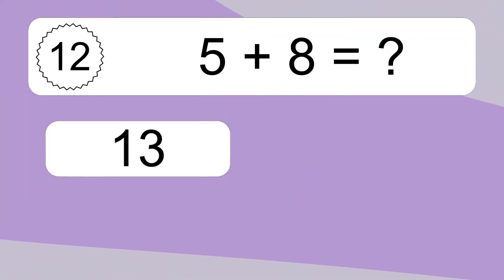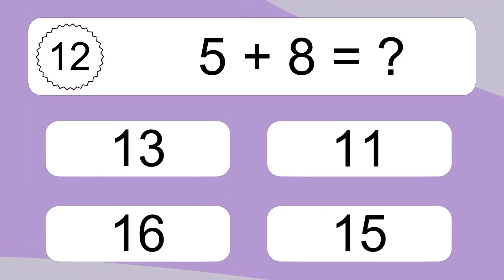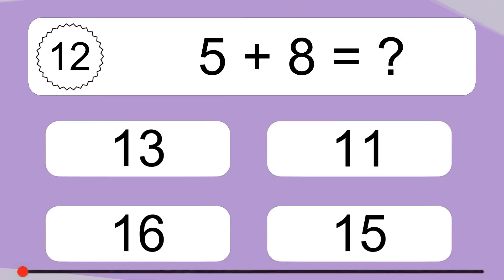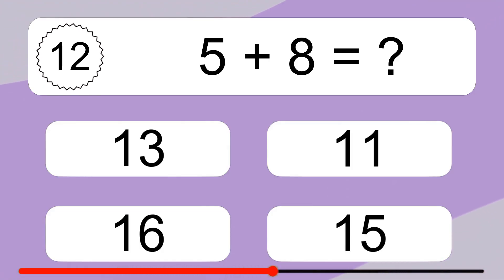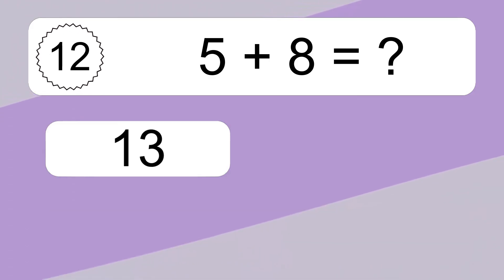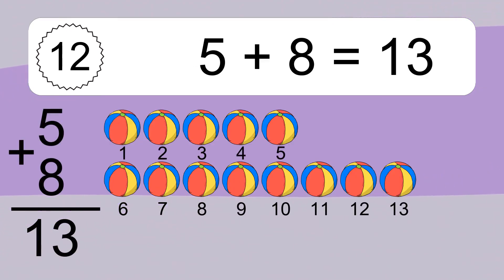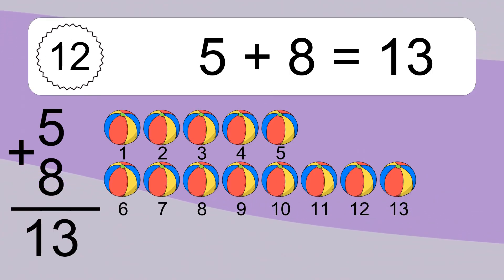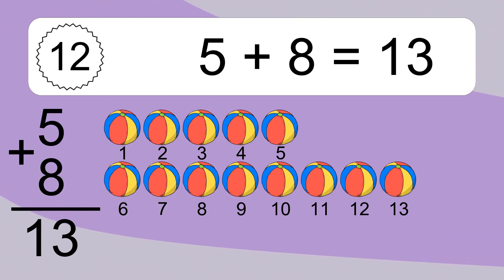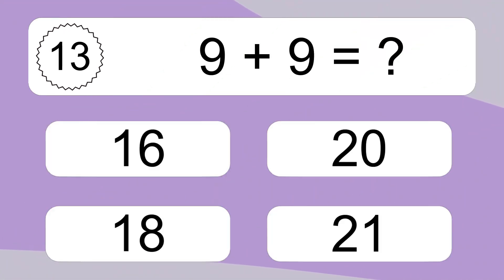5 plus 8 equals what? 5 plus 8 equals 13. Let's count it. 1, 2, 3, 4, 5, 6, 7, 8, 9, 10, 11, 12, 13.